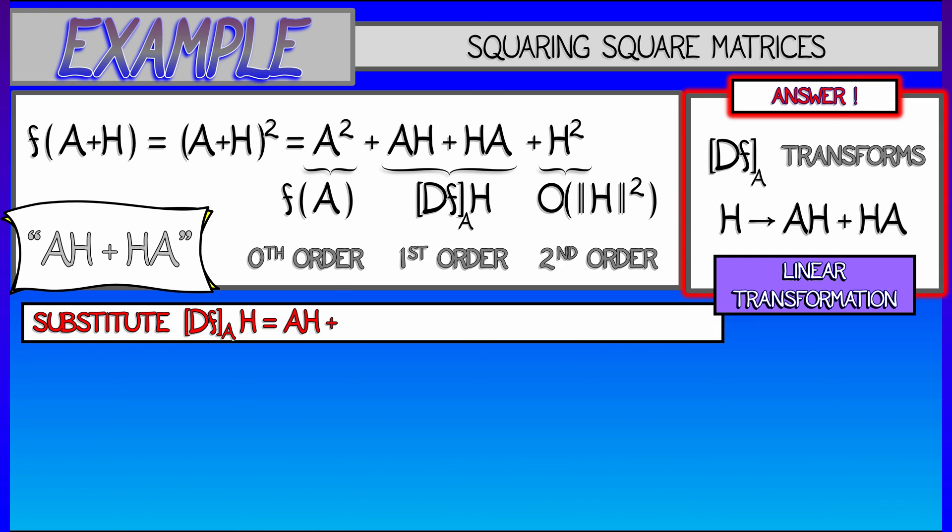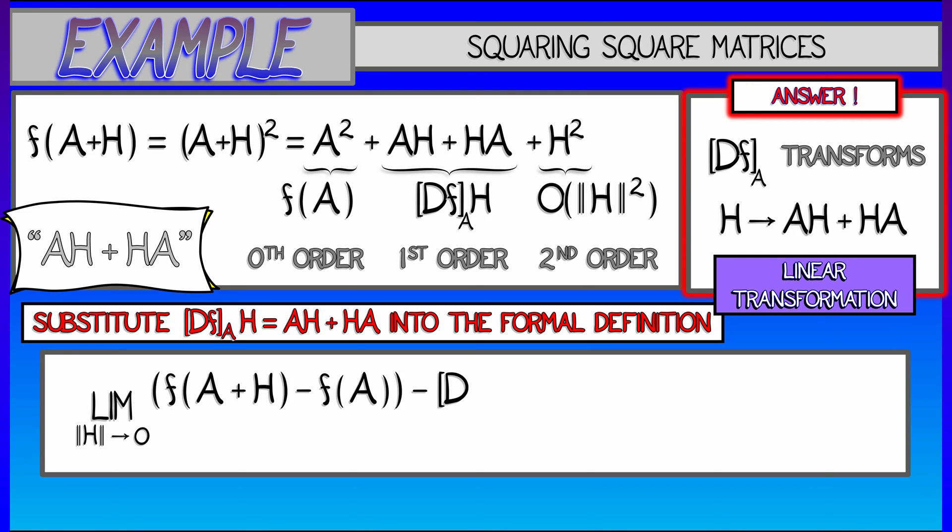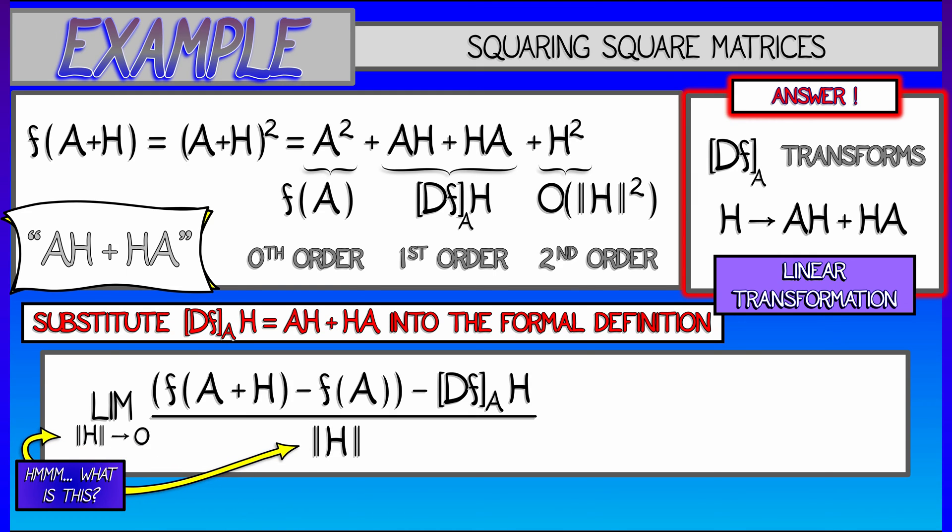And so if we were to substitute that into the formal definition, into that limit as H goes to zero of f(A+H) minus f(A) minus the derivative of f at A times H all divided by the length of H, the norm of H. That means that all the terms are going to zero. Then what we'll get is the A squared cancels, the H squared is left over, the AH plus HA go away. We get the limit as the length of H goes to zero of H squared over the length of H. That's vanishing to quadratic order in the numerator and first order in the denominator. That's zero.